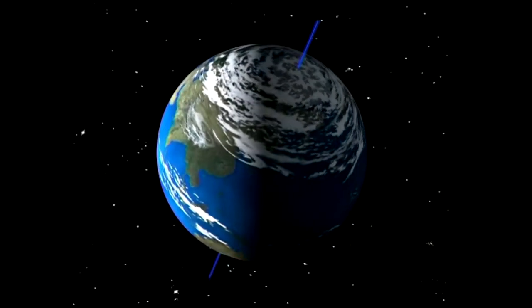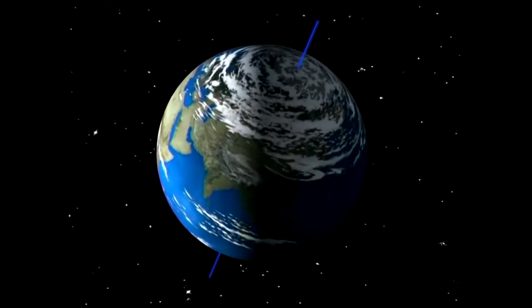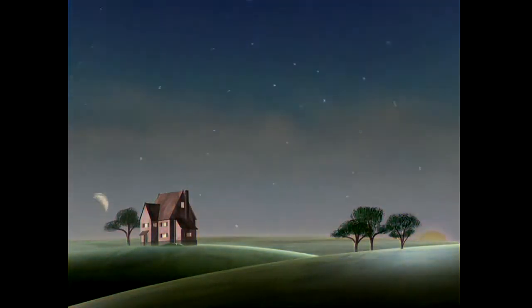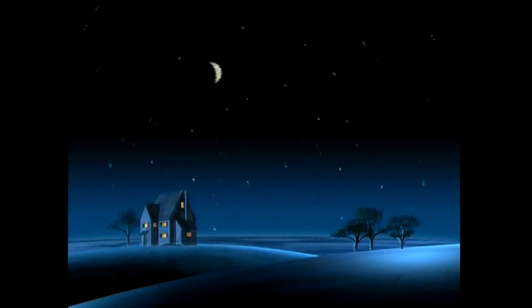We all know that the Earth turns on its axis. But how can we tell? When we look at the sky, we see the sun rising in the morning, climbing into the sky at noon and setting in the evening. Then at night, we see the moon and the stars doing much the same thing.